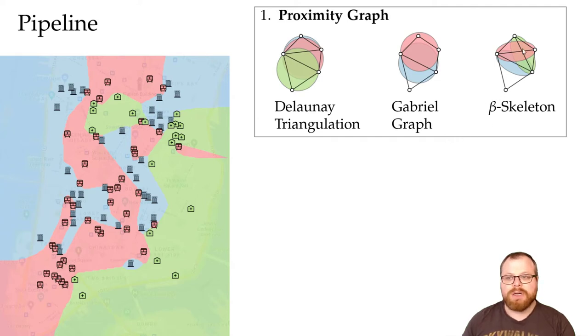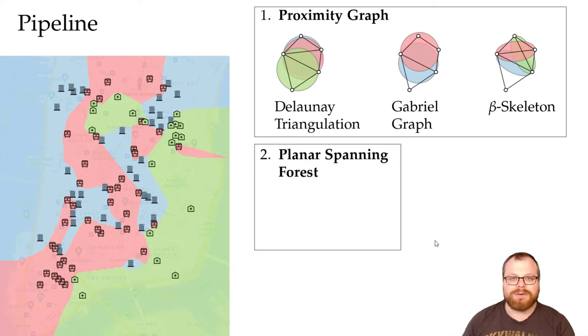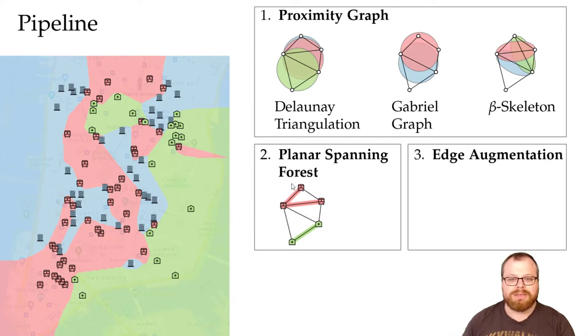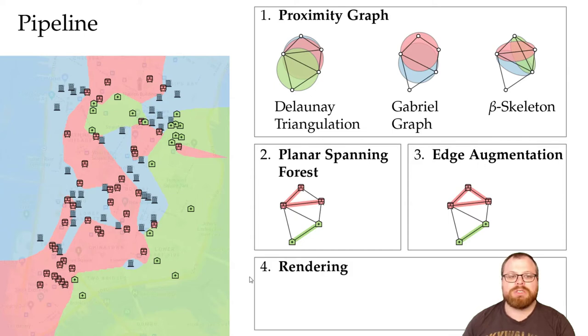A beta skeleton might give us even a non-planar graph. If we choose beta to 1, we get the Gabriel graph. If we set beta to 0, we get the complete graph. In the second step, when we have the proximity graph, we want to find a planar spanning forest in it. In the third step, we want to augment the spanning forest. And finally, we want to render our solution.